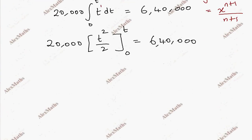So total saving is equal to 6,40,000. Now we have to apply the upper limit. We will substitute t here. That means upper limit t and minus lower limit.